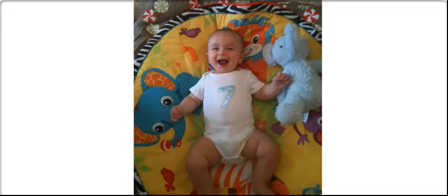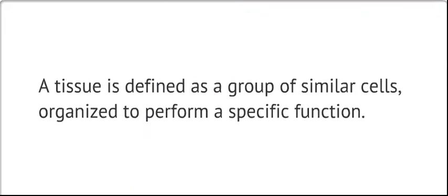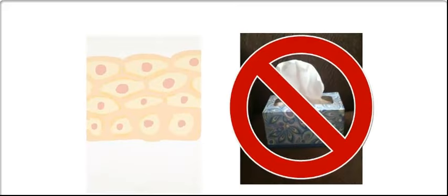The body of humans and most other animals is made up of four different kinds of tissues. A tissue is defined as a group of similar cells organized to perform a specific function. Our body is made out of tissue, not tissue. The only animals which lack true tissue structures are sponges.